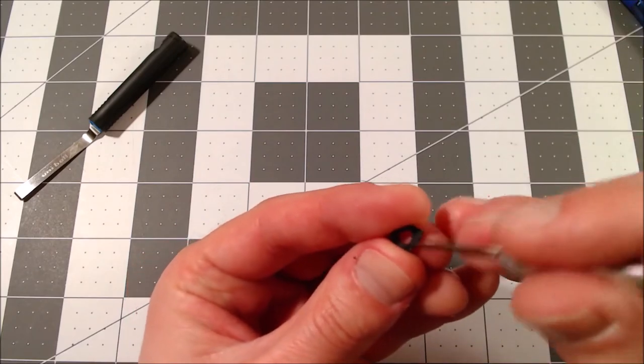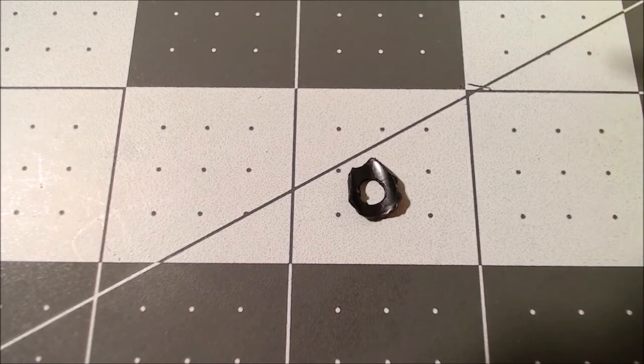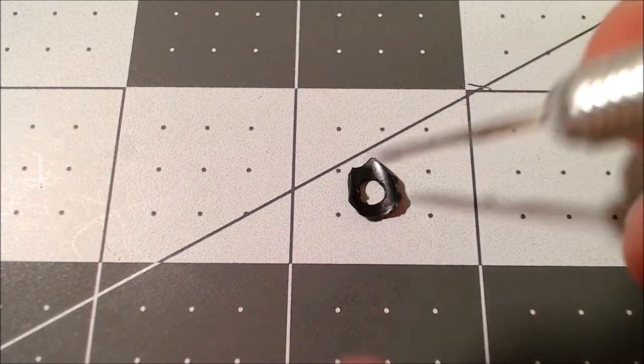And the outside edges too. You can see my exterior cut was far from perfect. So I'm going to just chop off a little bit to make this as round as I can.